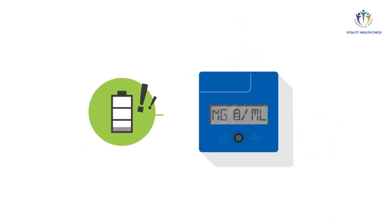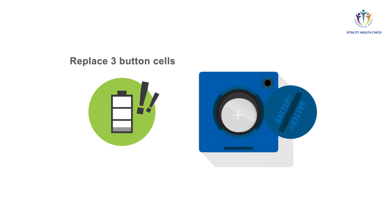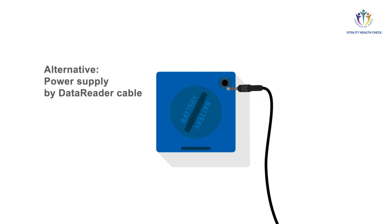In case the reader display shows the battery warning icon, change the batteries before starting the next measurement, or supply the VHC reader with power via the data reader USB connector cable.